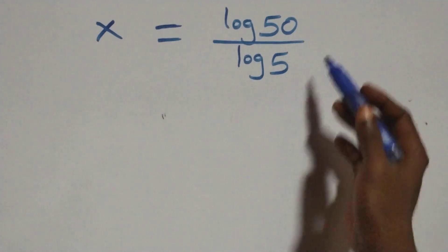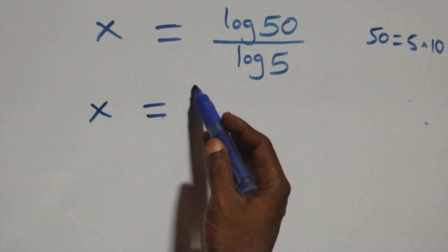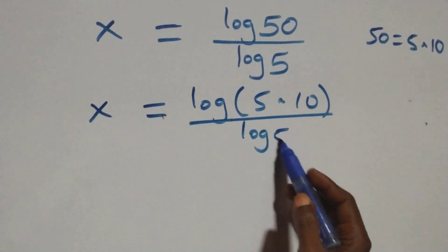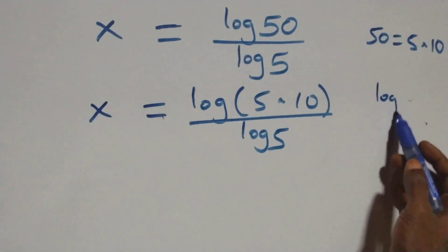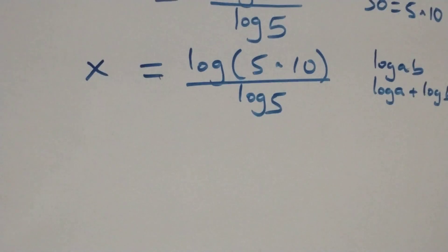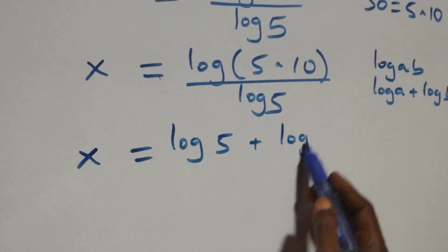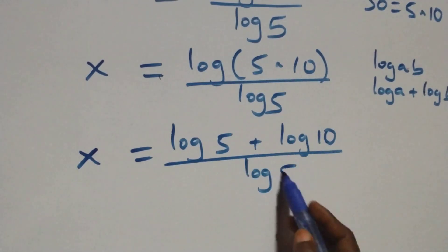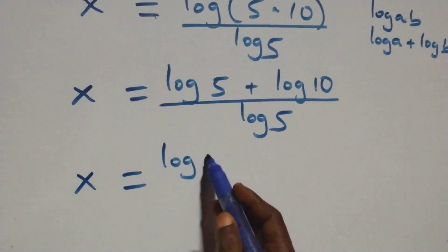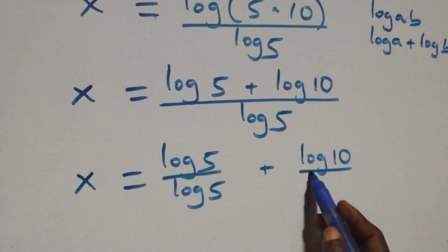Next step: we can express 50 as 5 times 10. So all we have becomes x equals to log(5 times 10) over log 5. This follows the log product rule — log(a times b) is the same as log a plus log b. So this becomes x equals to (log 5 plus log 10) over log 5.